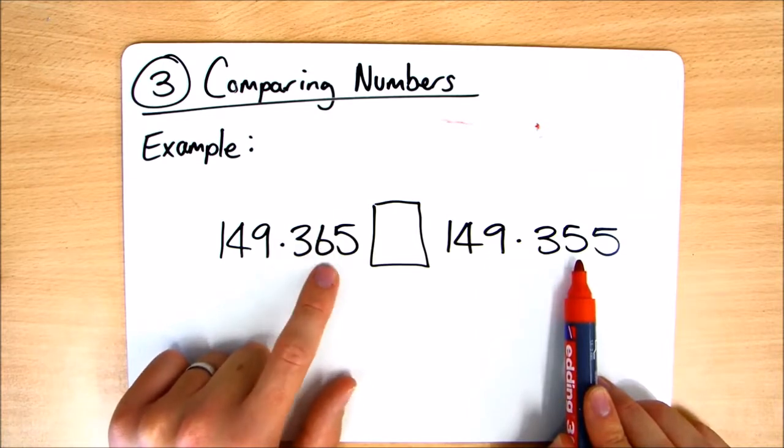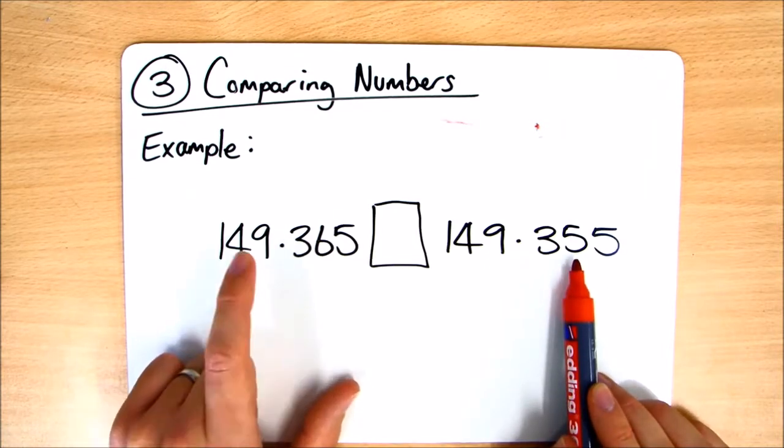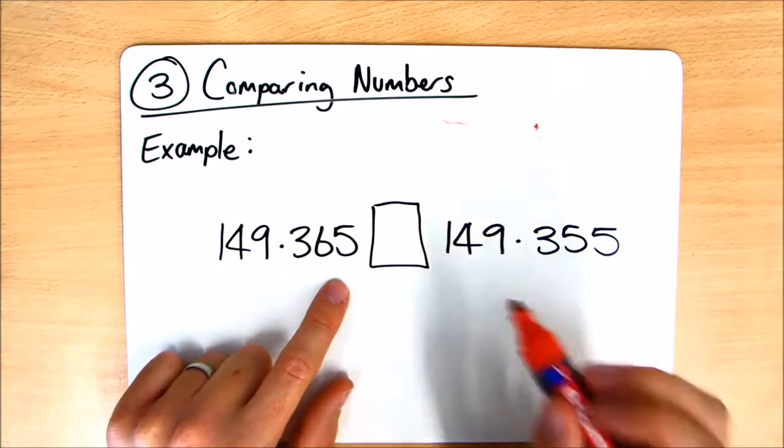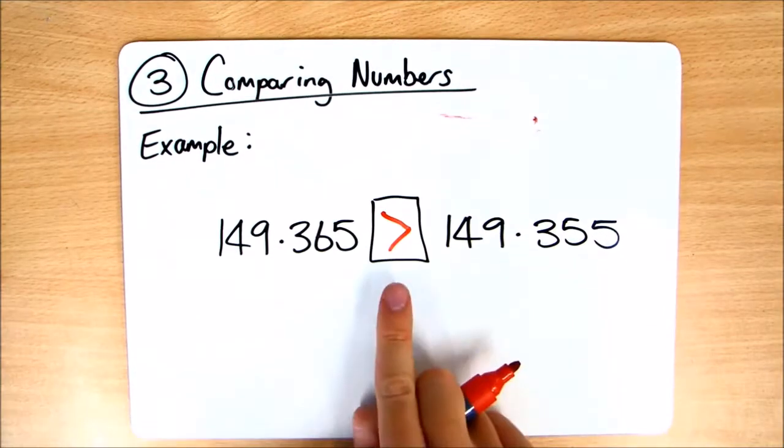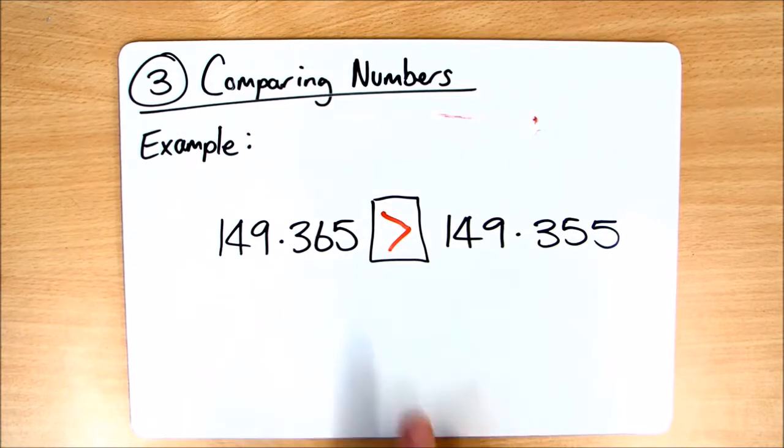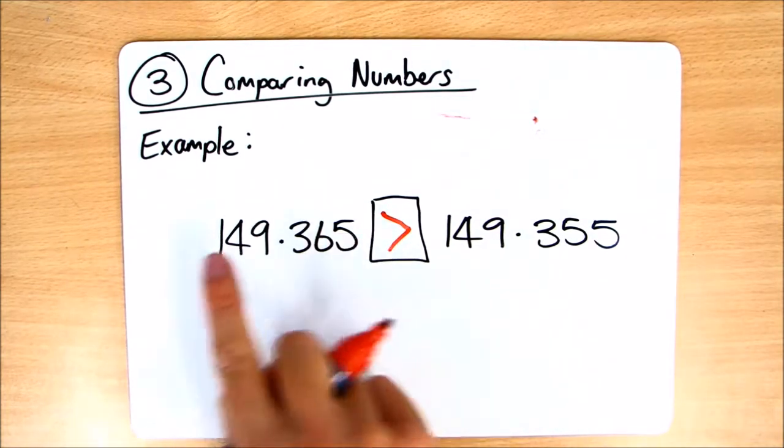And obviously six is greater than five, so this number here is greater than this number here. Just double-check to make sure your symbols are spot on - the widest part of the symbol facing the largest number.